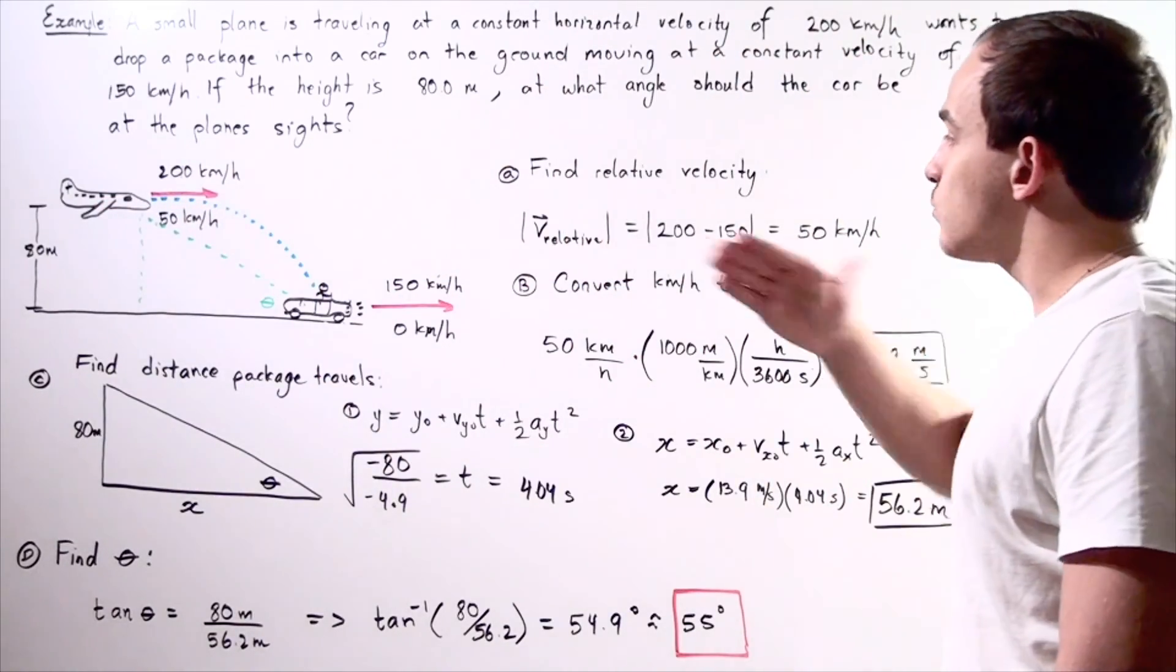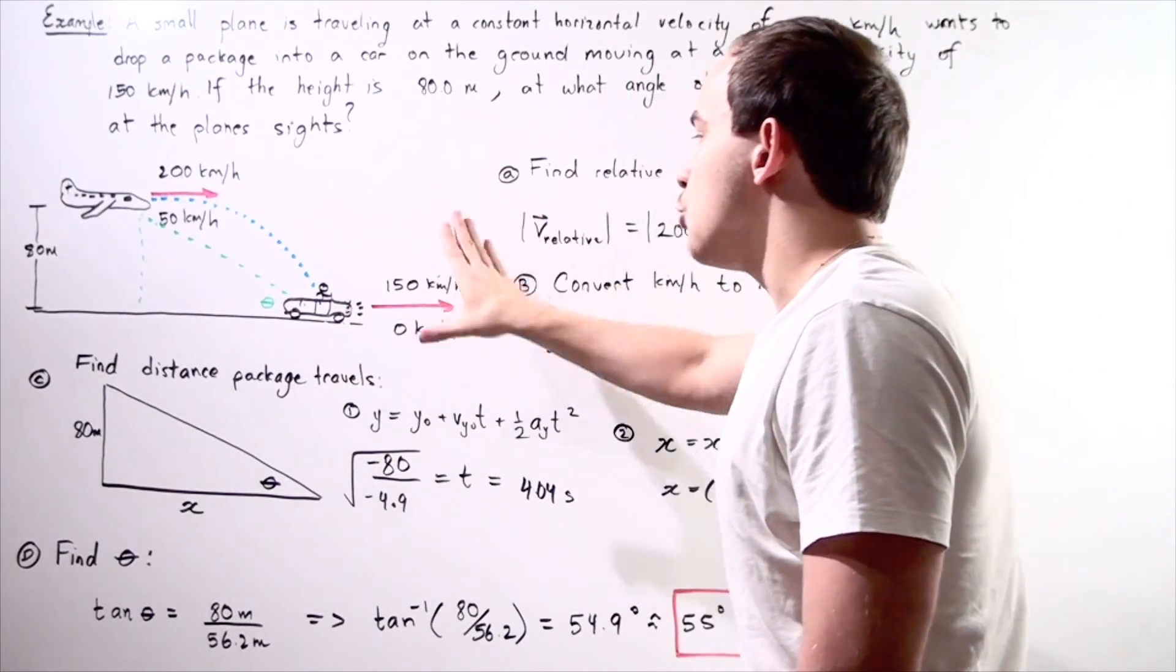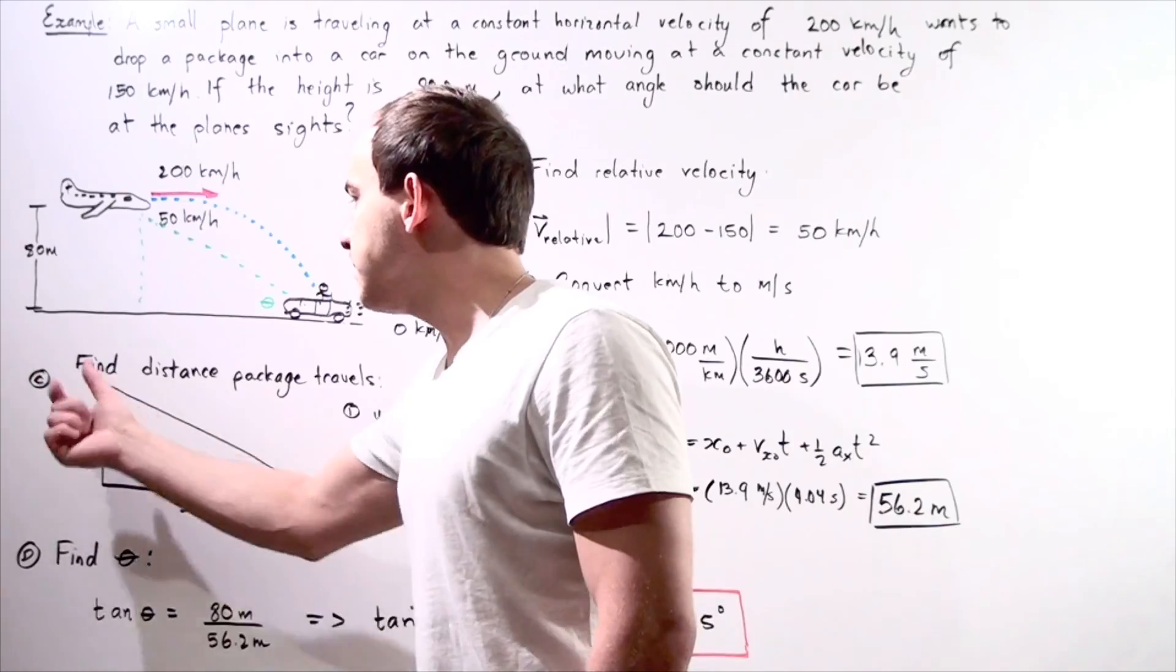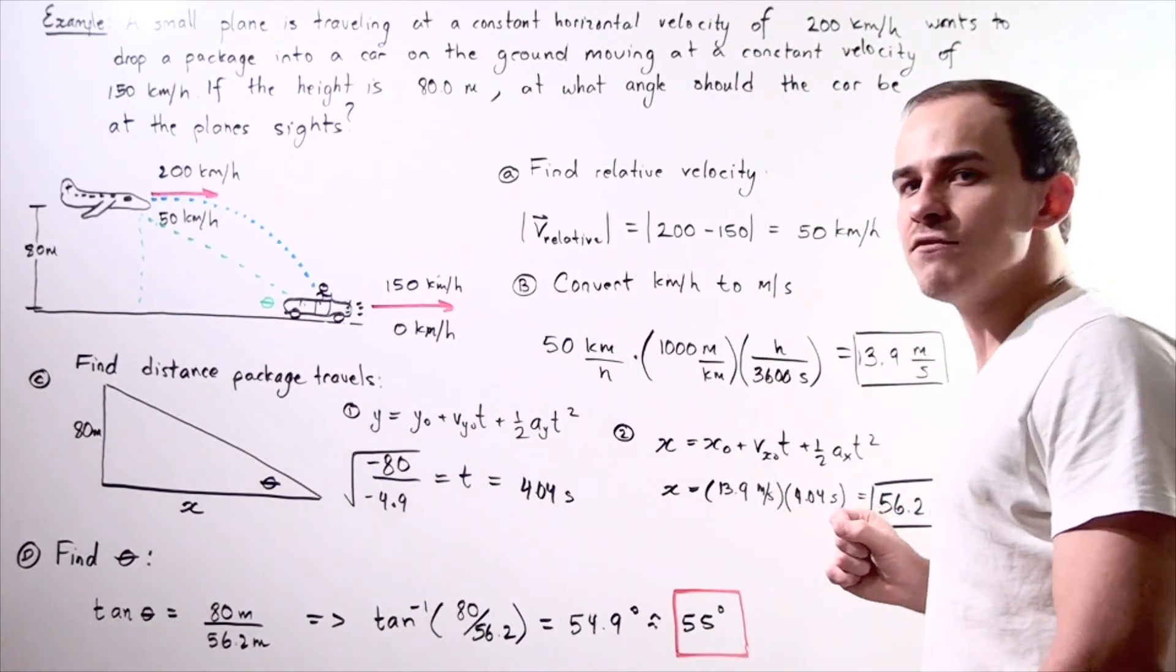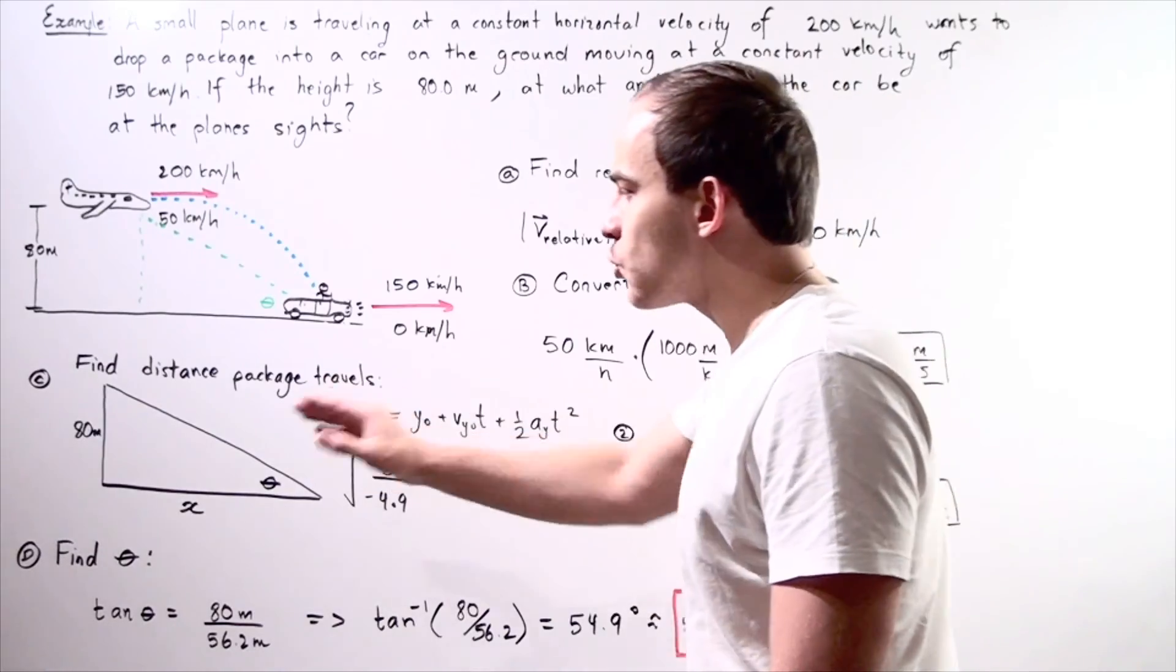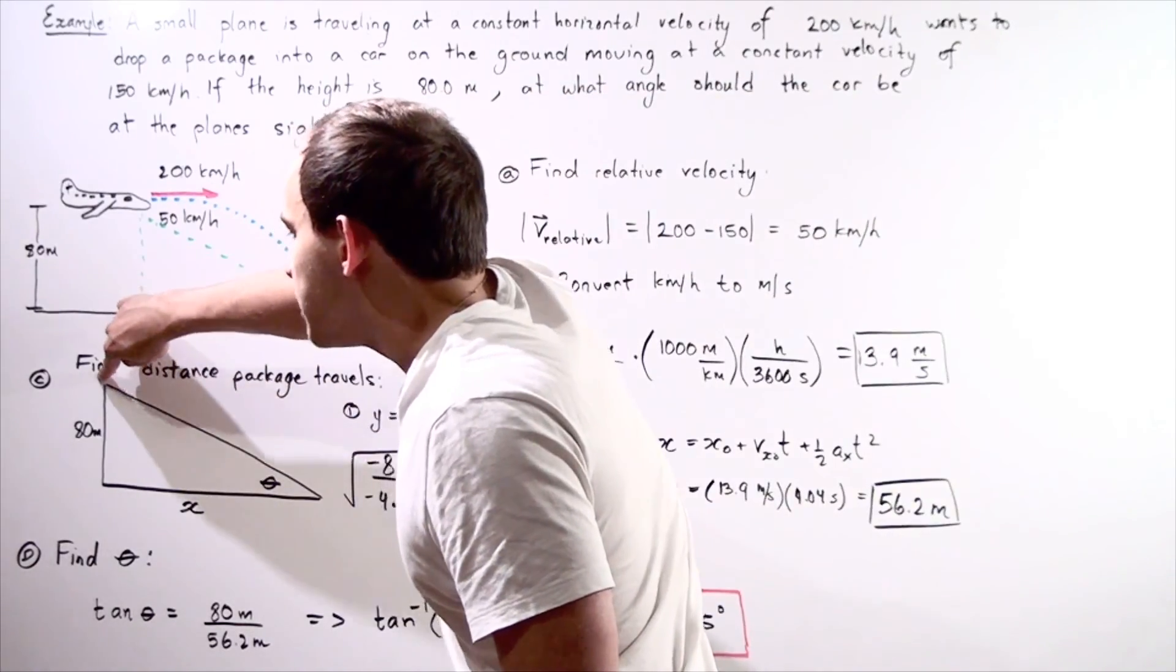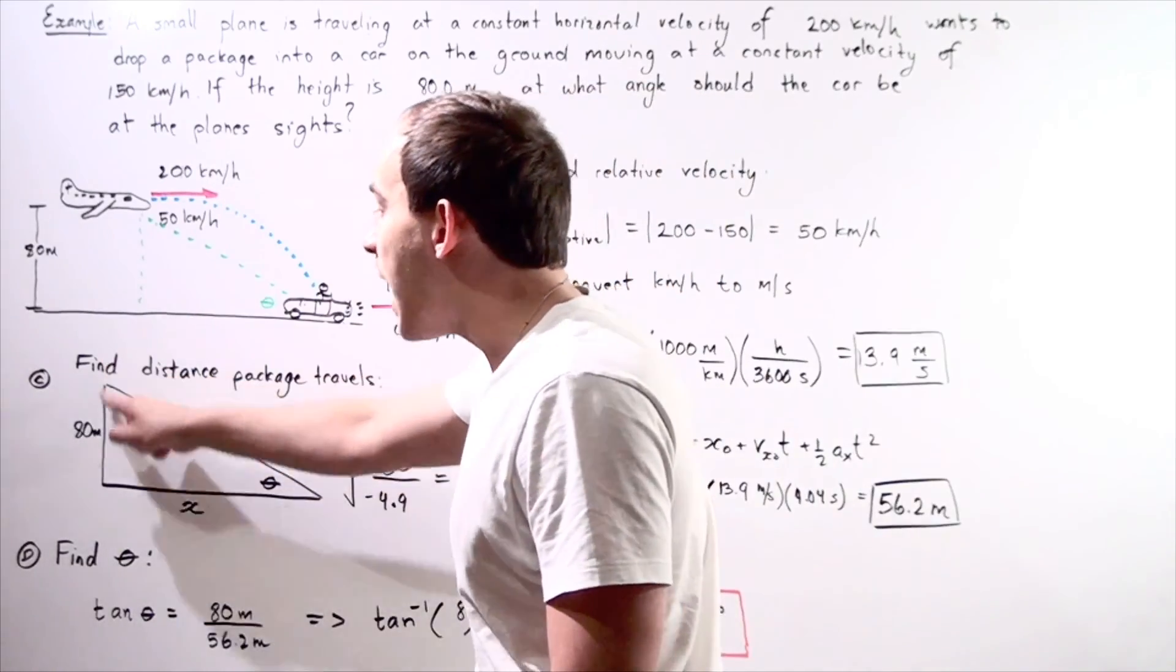Now once again, because we found, because we are dealing with the relative velocity, our car is assumed to be stationary while our plane is the object that's moving. So now let's go to part C. In part C, we want to find the distance the package actually travels along our x-axis. So let's take this triangle and let's redraw our triangle. So our car is stationary at this position. Our plane is moving at this position a distance of 80 meters above the car. So we know our height of the triangle.